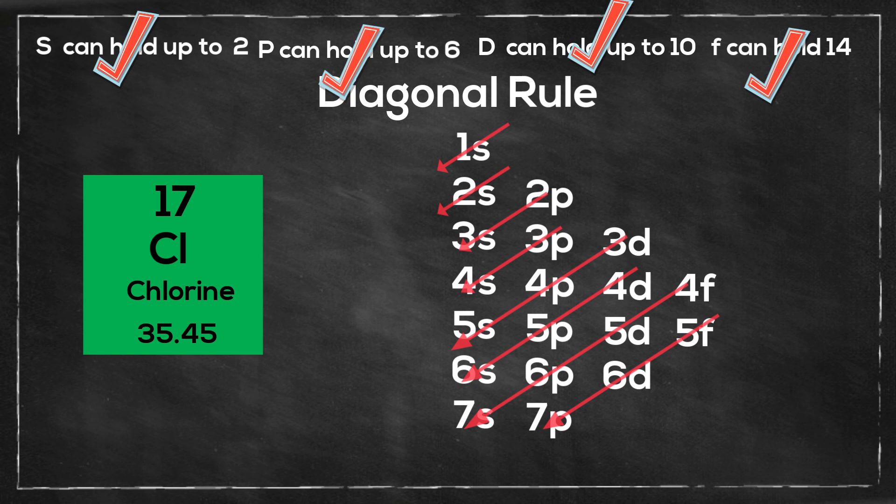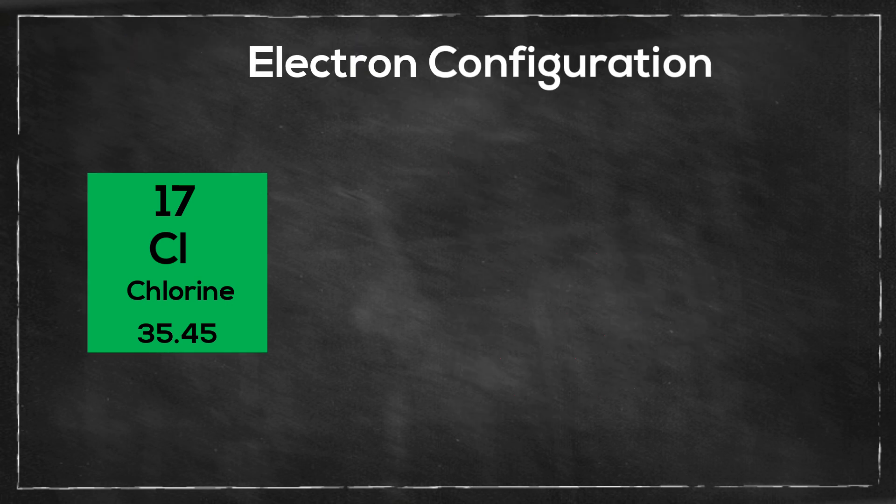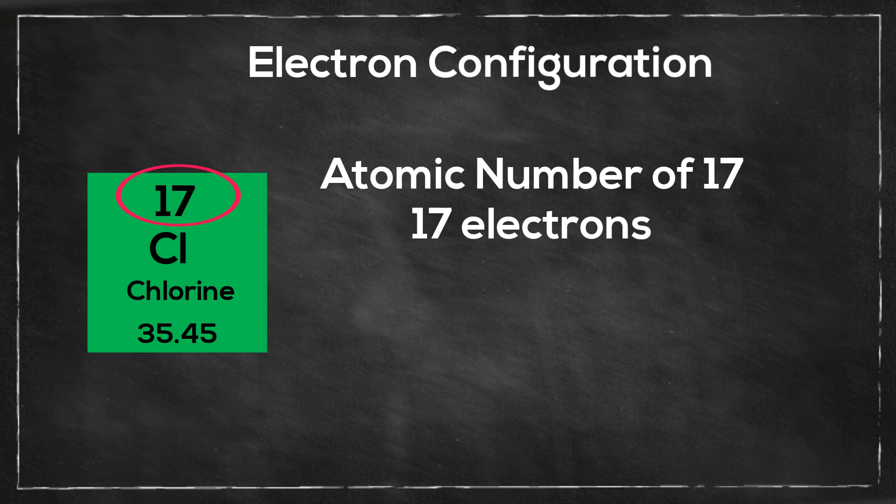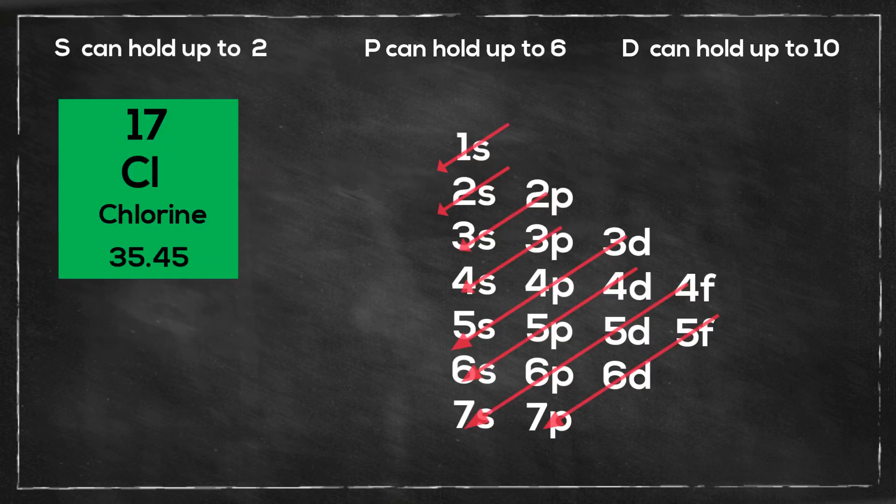Now let's get started with chlorine. We first need to figure out how many electrons chlorine has. If you notice, it has an atomic number of 17, so it will have 17 electrons. I will start at the 1s and it can take up 2 electrons, so it will be 1s2.